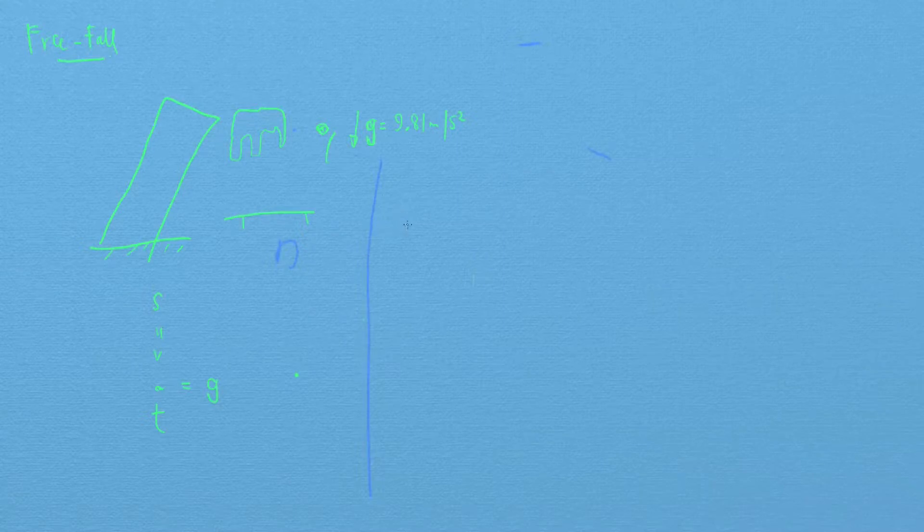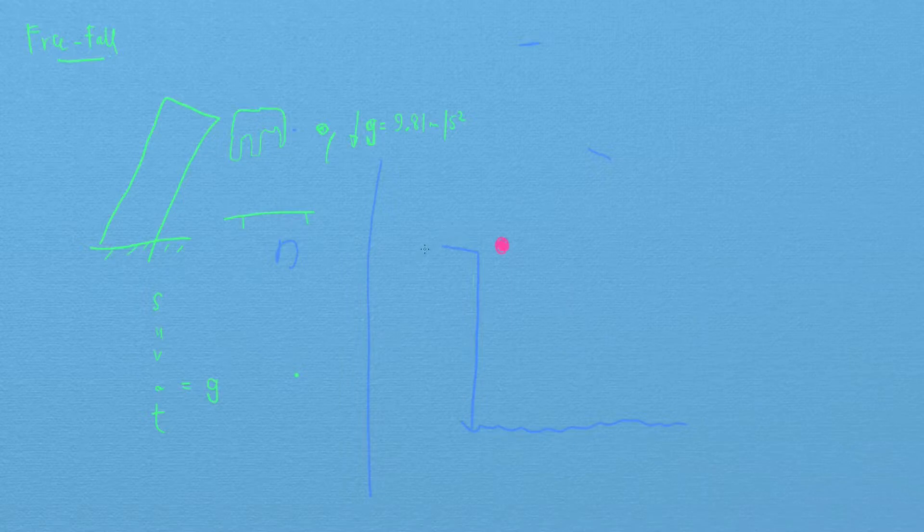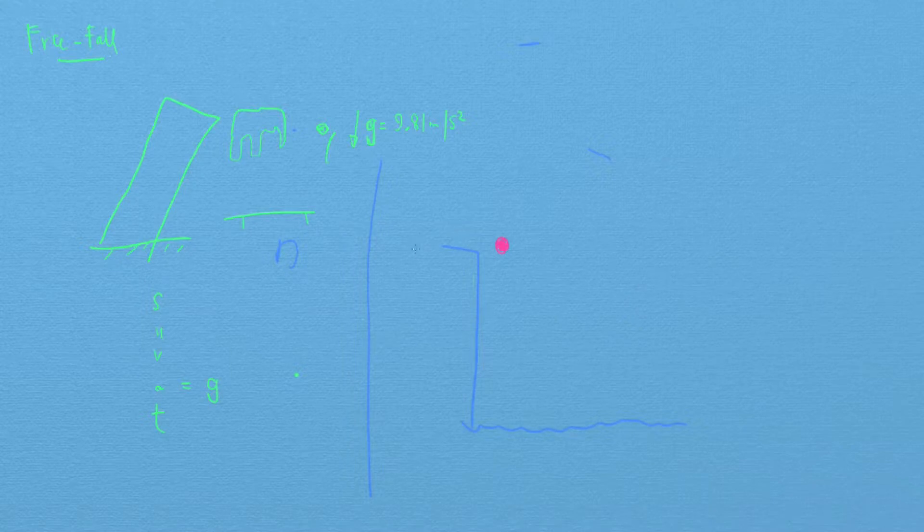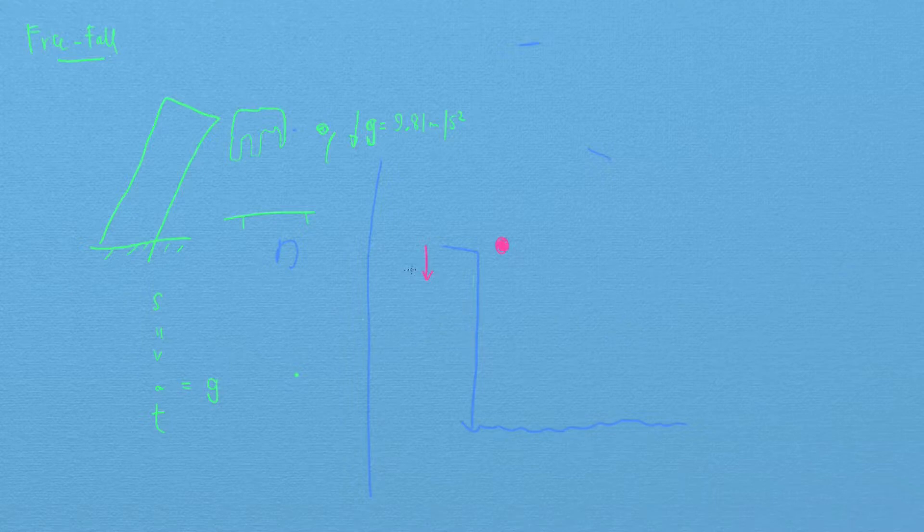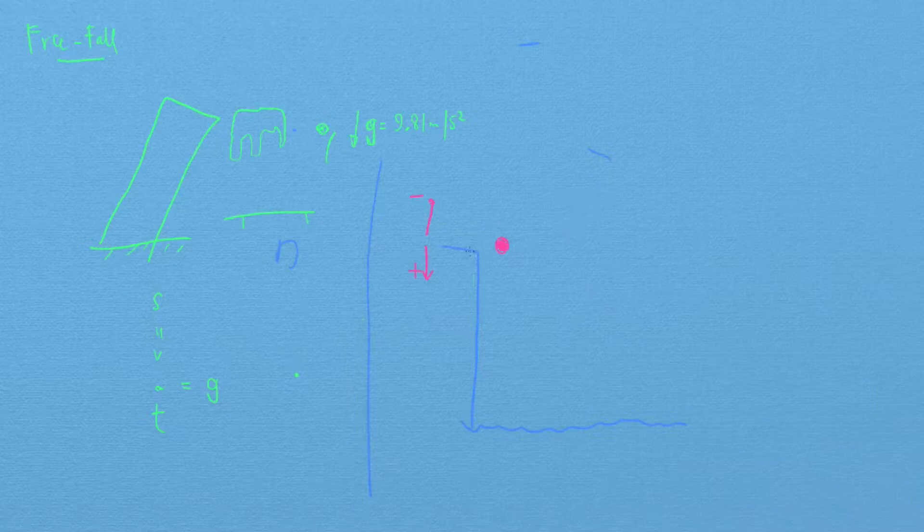Let's look at a situation where I have a cliff and I'm going to drop this object. When you're doing problems, because you're dealing with vectors, you need to make sure that your directions are correct. It's up to you to define what you want to be positive and what you want to be negative. In this case, I'm going to call down positive and up negative. So long as you stick with this convention, your answers will come out correct.